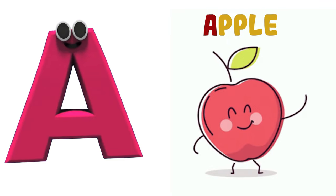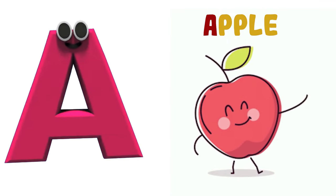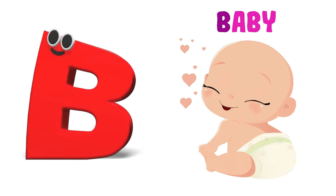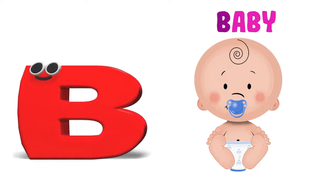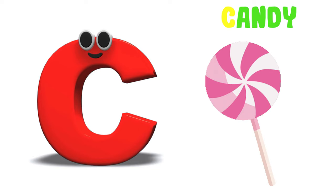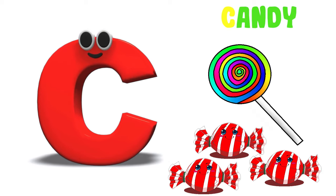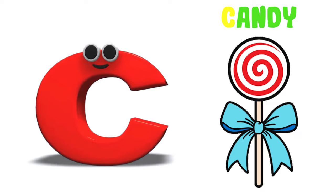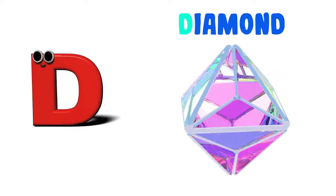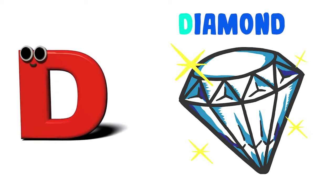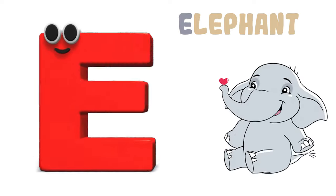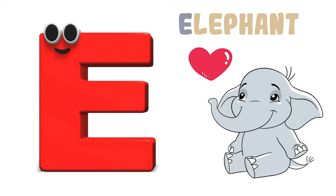A is for Apple, A-A-Apple, A-A-Apple, A-Apple. B is for Baby, B-B-Baby, B-B-Baby, B-Baby. C is for Candy, C-C-C-Candy, C-C-Candy, C-Candy. D is for Diamond, D-D-Diamond, D-D-Diamond, D-Diamond. E is for Elephant, E-E-Elephant, E-E-Elephant, E-Elephant.